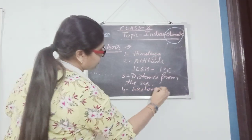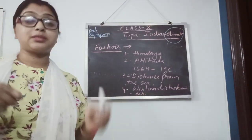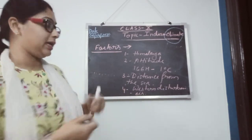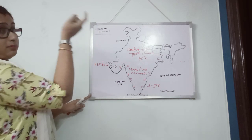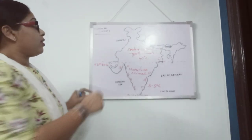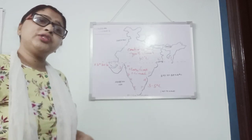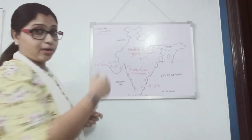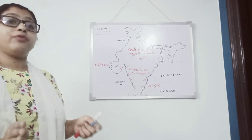The next factor is western disturbances. The disturbances which are created from the western side of India — in countries like Pakistan, Afghanistan, Kazakhstan, Iraq, and Iran — in the winter season create temperate cyclone conditions. Due to that, temperatures fall and light rain occurs in parts of Punjab, Haryana, western Uttar Pradesh and some parts of the Himalayas. These are the main factors which influence and control the Indian climate.